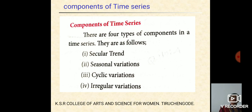Next, we see cyclic variations. The variations are not necessarily and uniformly periodic in nature. That is, it may or may not follow exactly similar pattern after equal intervals of time. Next, we see irregular variations. These variations do not have particular patterns and there is no regular period of time of their occurrence. These are accidental changes which are purely random or unpredictable.